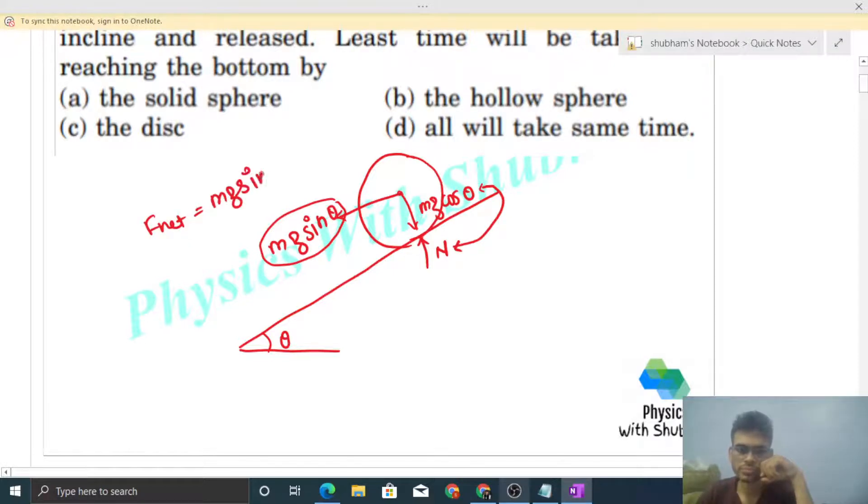So acceleration of this body will be net force divided by mass, that is g sin theta. Now let's talk about torque. So if I talk about torque about center of mass...